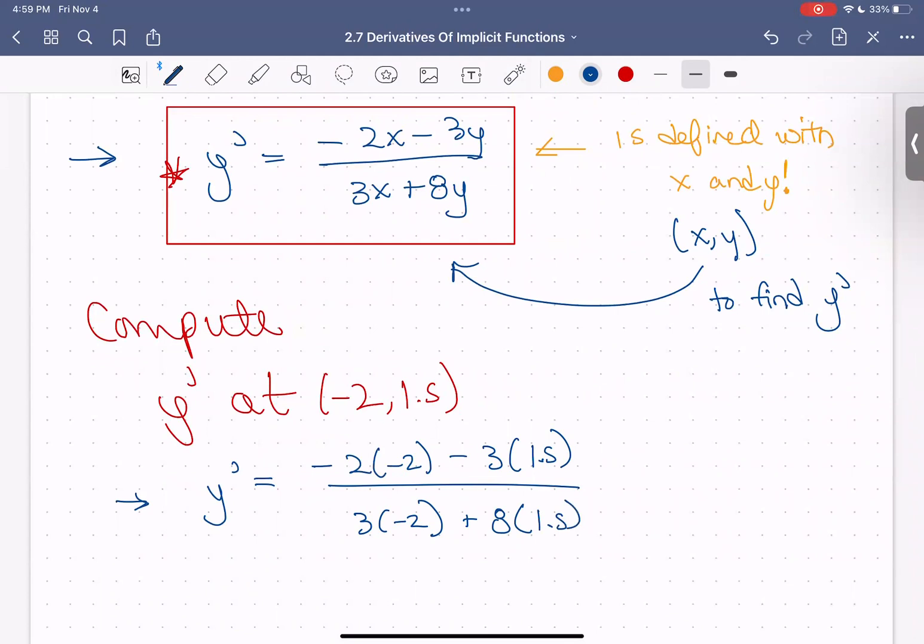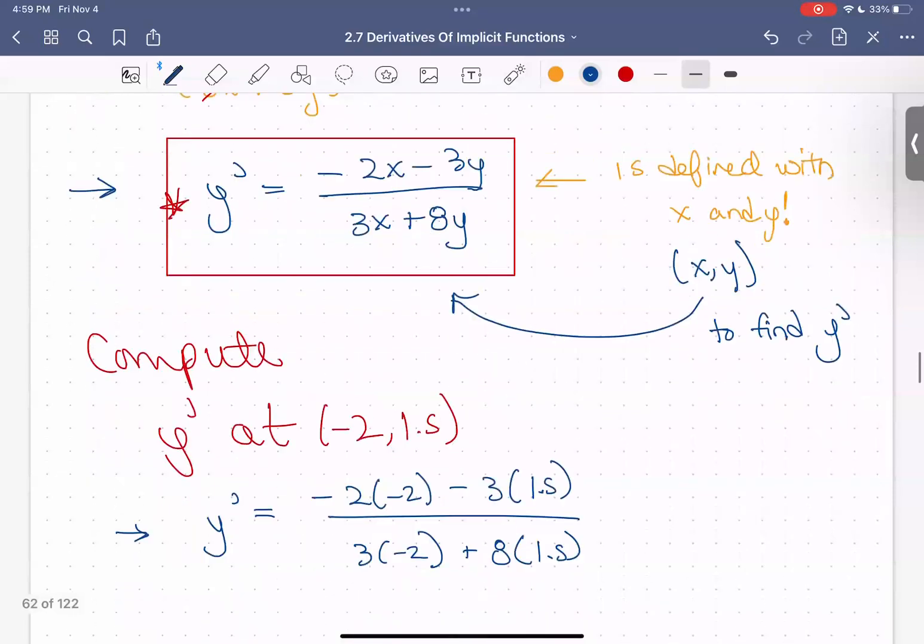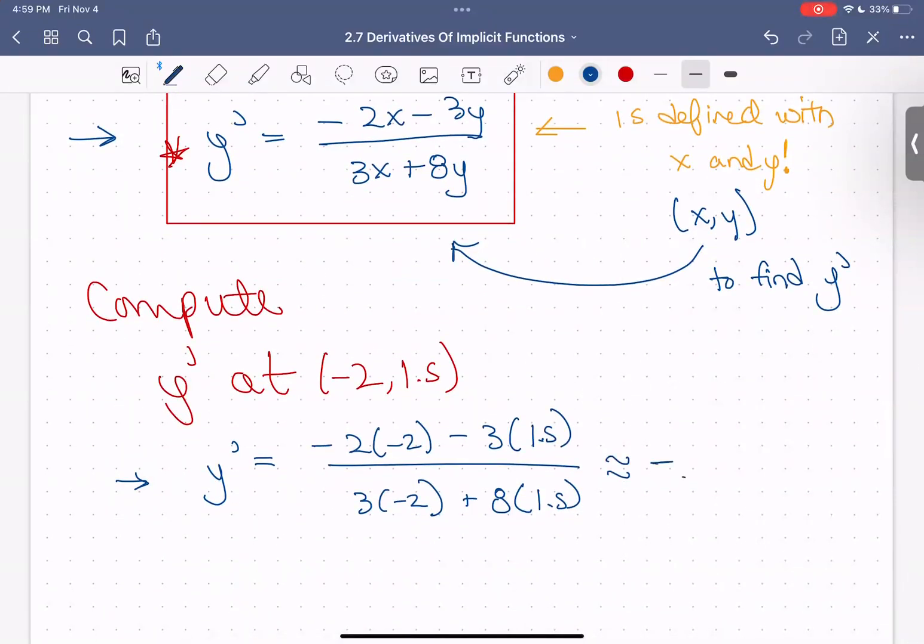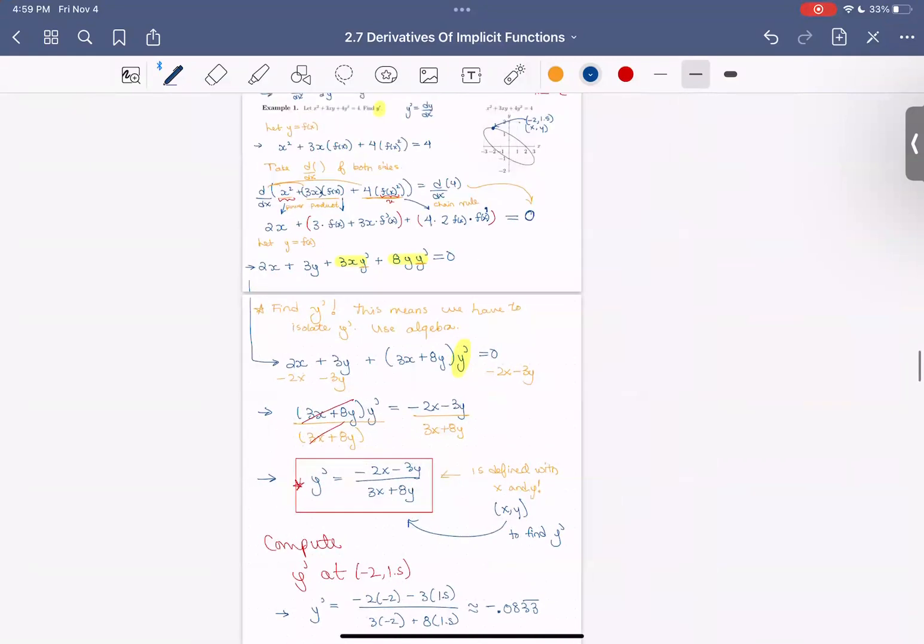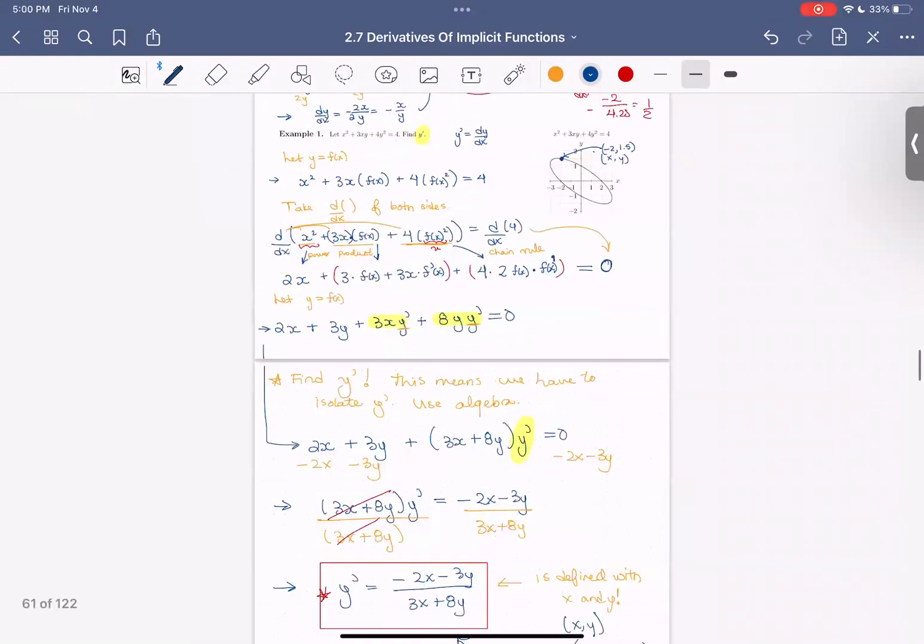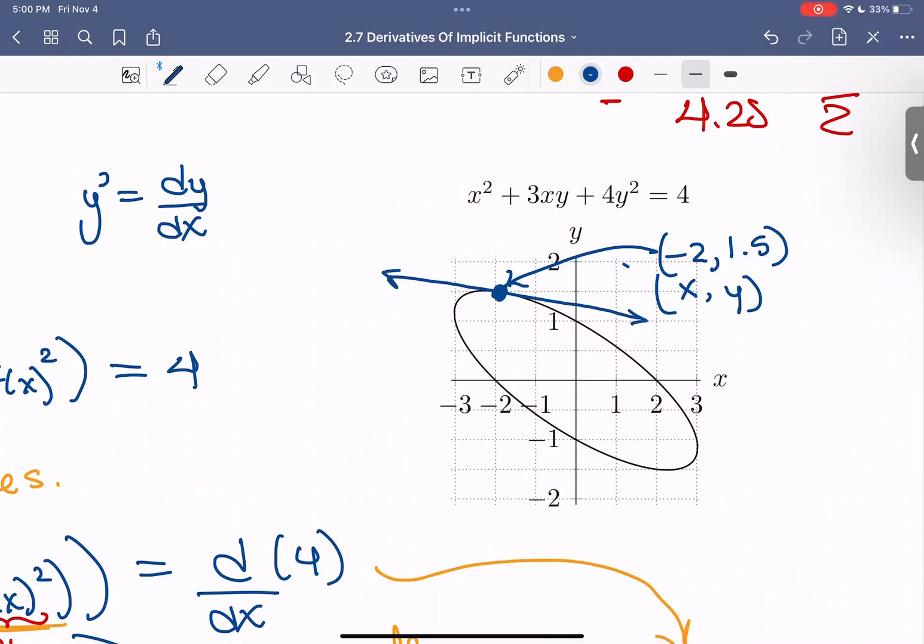So take a moment, pause the video and work that computation out on your own calculator. And if we both did it correct, then we're both going to get the same answer. I got something around negative 0.083 repeating. And we can check. Yeah, that tangent line looks a little negative but mostly flat, but a little bit negative. So the slope of that line is going to be about negative 0.083.